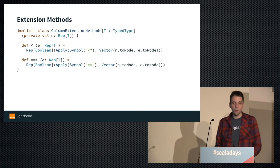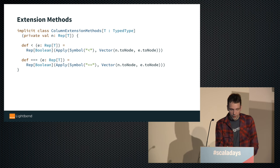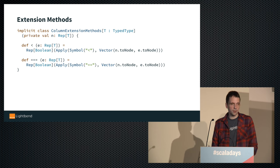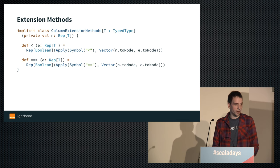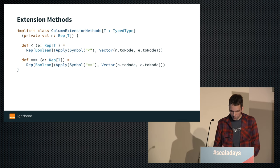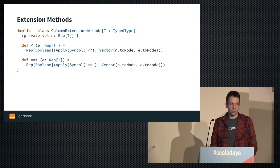What do these operators return? They return a Rep[Boolean]. The implementation creates a symbol representing the function — symbols are just wrappers for strings in Toy Slick — and the function application has two parameters: n.toNode on the left and e.toNode on the right. So we reify the computation: left side, less-than, right side.